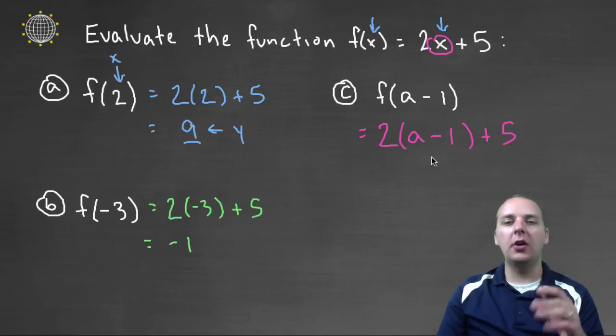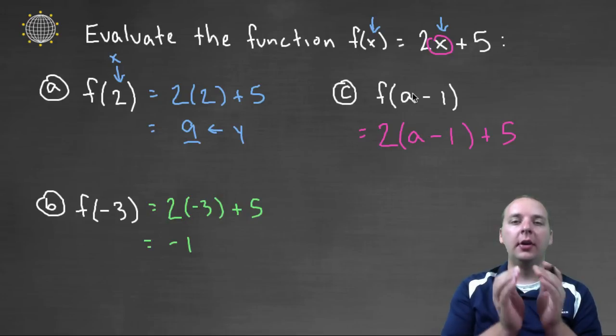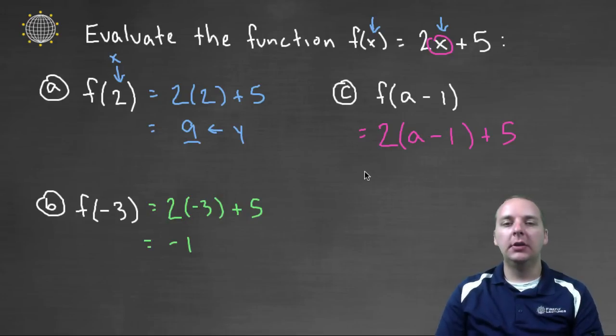And the only thing I'll caution you against is to remember that the a minus one has to go in as a packet together in parentheses. So we can clean this up a little bit. If we distributed the two, we'd have two a minus two plus five. And then that would give us two a plus three, that's minus two plus five.